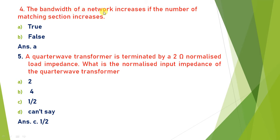Next: the bandwidth of a network increases if the number of matching sections increases — true or false? If you have a multi-section network and the number of sections increases, there will be less attenuation and higher matching. The characteristic of a multi-section transformer is that as the number of sections increases, the bandwidth increases. So the statement is true — answer is (a).